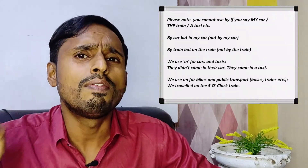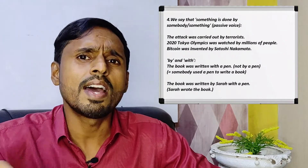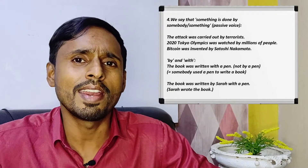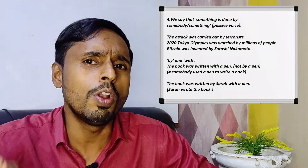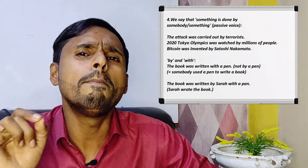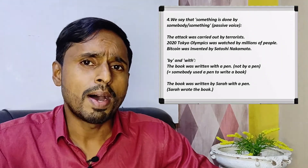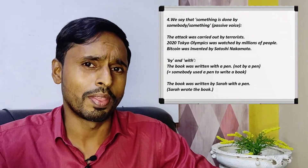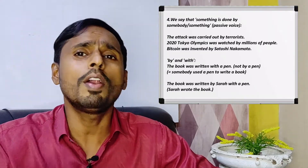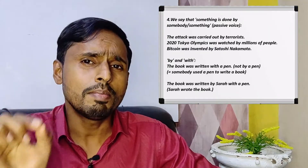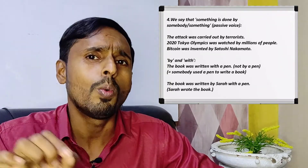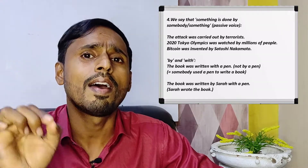We say that something is done by somebody or something in passive voice. He was killed by the CIA. The attack was carried out by terrorists. The 2020 Tokyo Olympics was watched by millions of people. Bitcoin was invented by Satoshi Nakamoto. Here, compare 'by' and 'with': the book was written with a pen, not by a pen — which means somebody used a pen to write the book. On the other hand, 'the book was written by Sarah with a pen' means Sarah wrote the book.